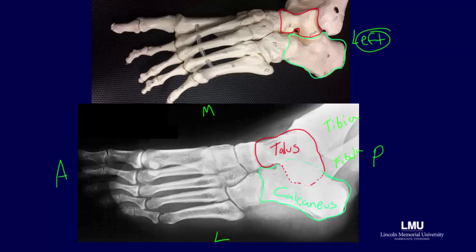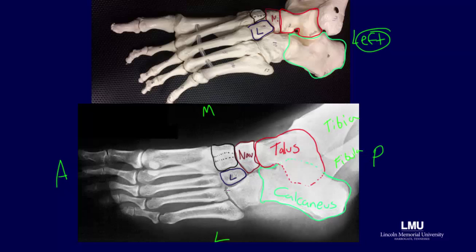Recall from the AP view that the navicular lies anterior to the talus, and it is shown here in maroon. On the AP oblique view, the lateral cuneiform can be seen in isolation. This is unique to this view because in the AP view, the medial cuneiform could be seen in isolation, whereas the intermediate and lateral could not be well differentiated. Conversely, in the AP oblique view, the medial and intermediate cuneiforms cannot be well differentiated. The last tarsal bone seen in this AP oblique view is the cuboid.